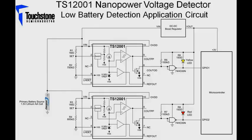Now let's take a look at the circuit. As you can see, here we have a low-battery detection application circuit where two TS-12001 devices are being used and are powered by a single 1.5-volt lithium AA battery.